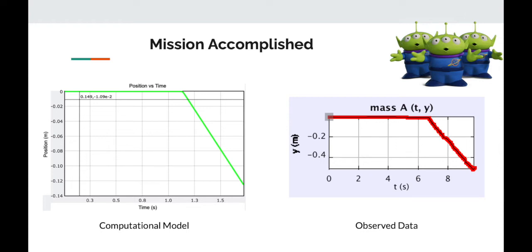In the graph for observed data, you can see that the line isn't as straight as the one in the computational model, and this is due to some human error and some discrepancies with the slinky being dropped. This includes things such as air resistance or the drag constant being different in the real model versus the computational model.